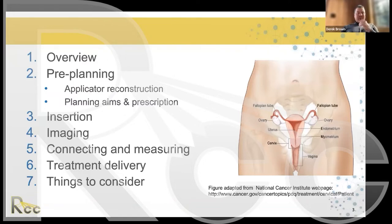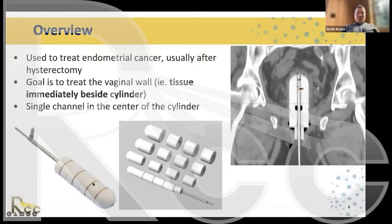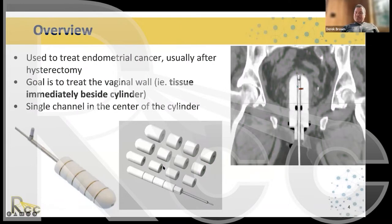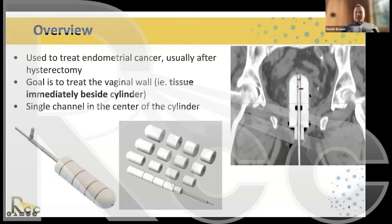Here's an overview of the cylinder — you can see what it looks like on the bottom left of the screen. We call this a segmented cylinder because we can vary its length by adding or removing segments. We can also vary the width, as shown in the bottom middle. The goal is to treat endometrial cancer, typically after a hysterectomy has been performed, to address residual cells in the upper portion of the vagina.